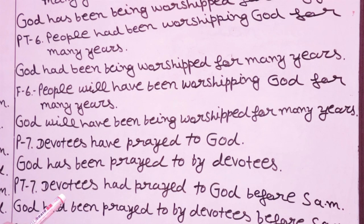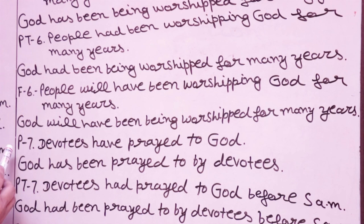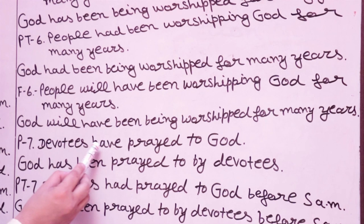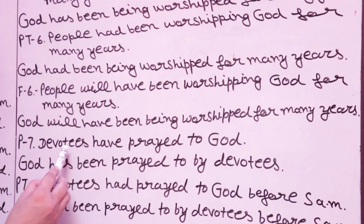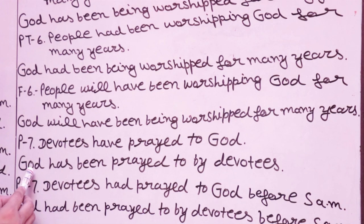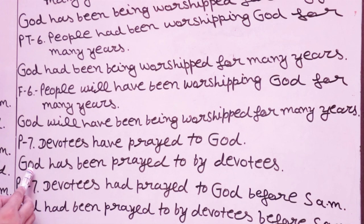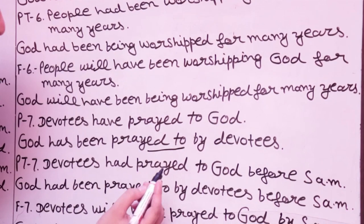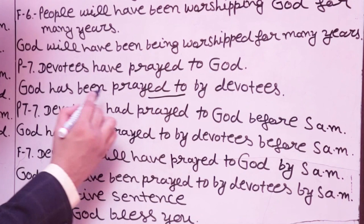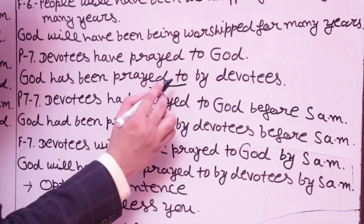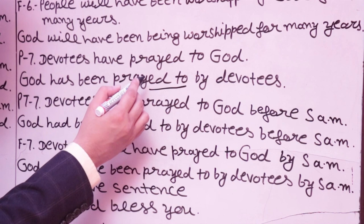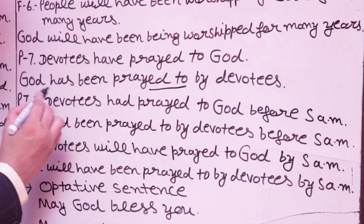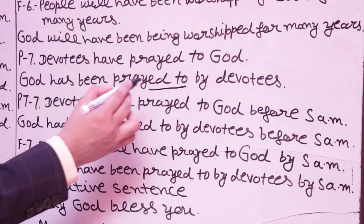P7 — present perfect: 'The devotees have prayed to God.' Here God becomes subject: 'God has been prayed to by devotees.' Note carefully: when a verb has a preposition attached — like 'pray to' — do not remove the 'to' in passive voice. Students get confused thinking every passive uses 'by,' but use appropriate prepositions. This type of question is often asked in UPSC and SSC exams — be careful.